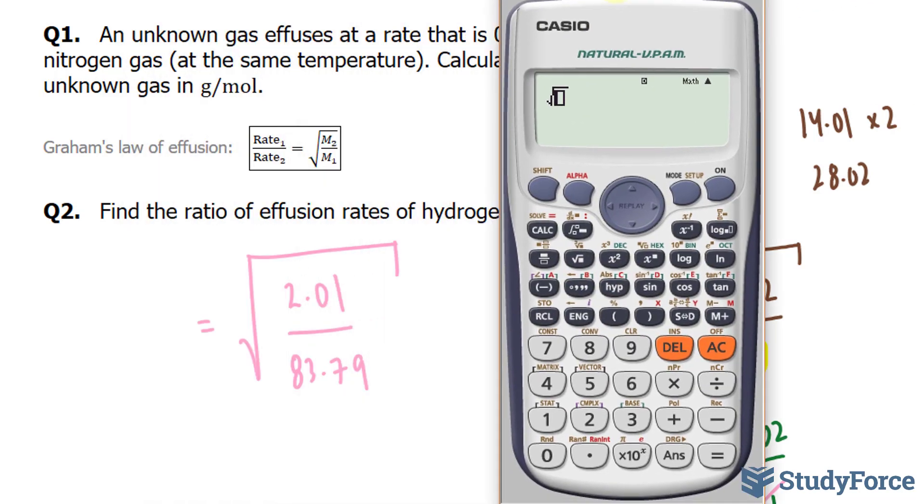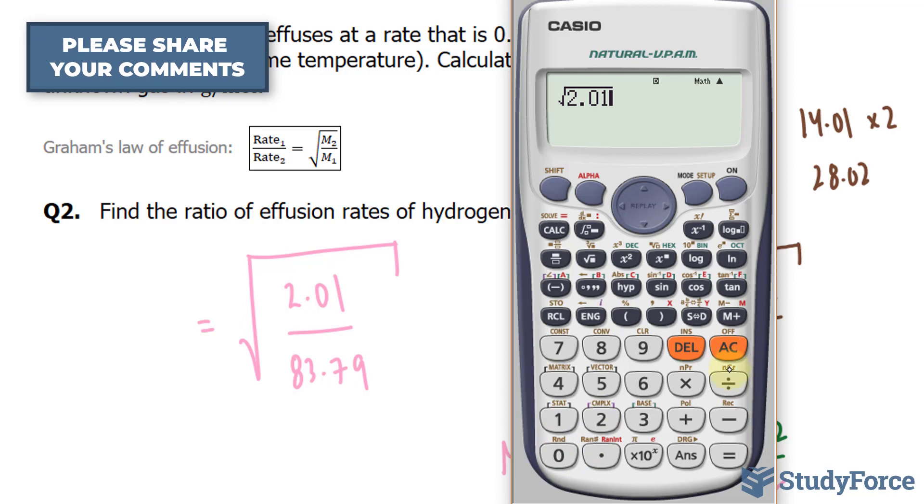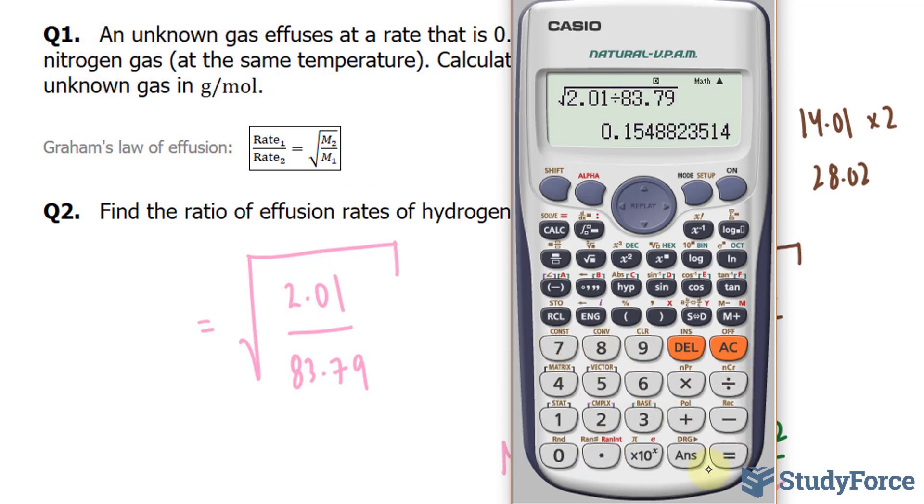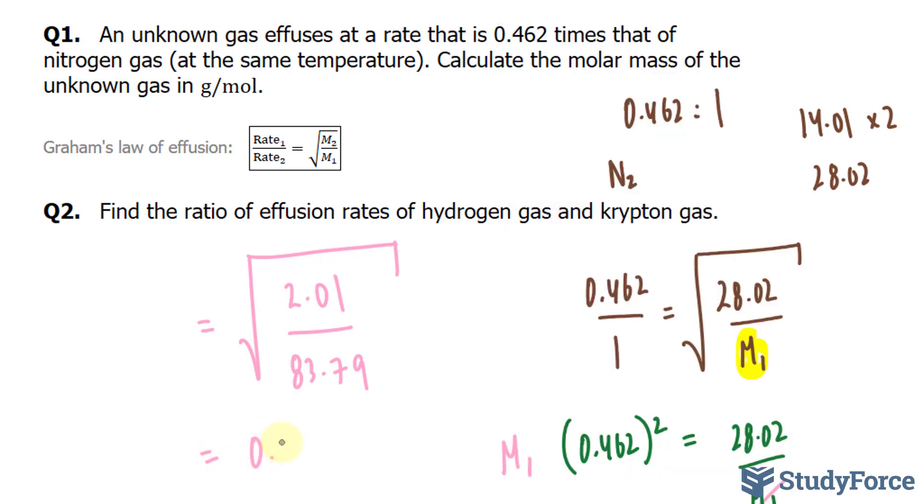Now I'll take the square root of 2.01 by 83.79. That gives us 0.1548.